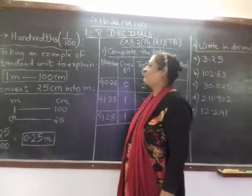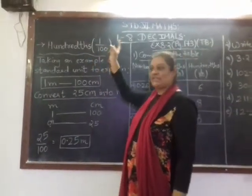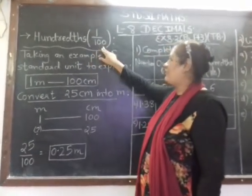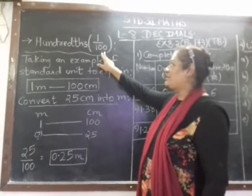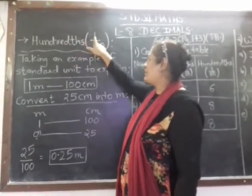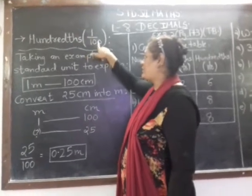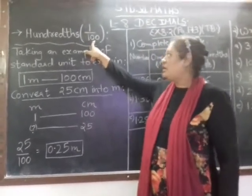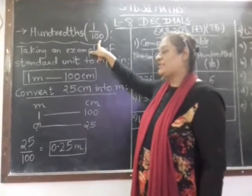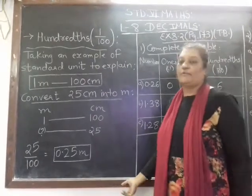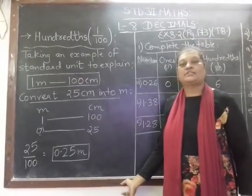Moving on to the new topic for decimals, we had seen 1 upon 10, tenths. Now we are moving on to 1 upon 100, that is hundredths. This is only one part out of total 100. So 1 upon 100, as you can see, this is a simple fraction form. So how to convert it to decimal? It is very easy. I will take an example of standard unit to explain for the 1 upon 100 or hundredths.